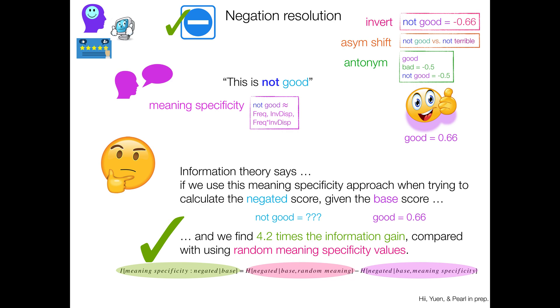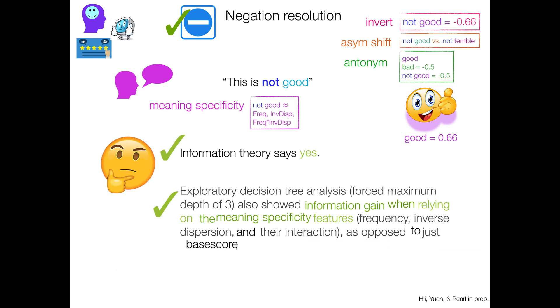And we also did an exploratory decision tree analysis where we forced the maximum depth of 3 to kind of find like the top 3 features one might use. This also showed information gain when relying on the meaning specificity features. So frequency, inverse dispersion in their interaction, as opposed to just base sentiment score. So not crazy to think that this might get us some mileage.